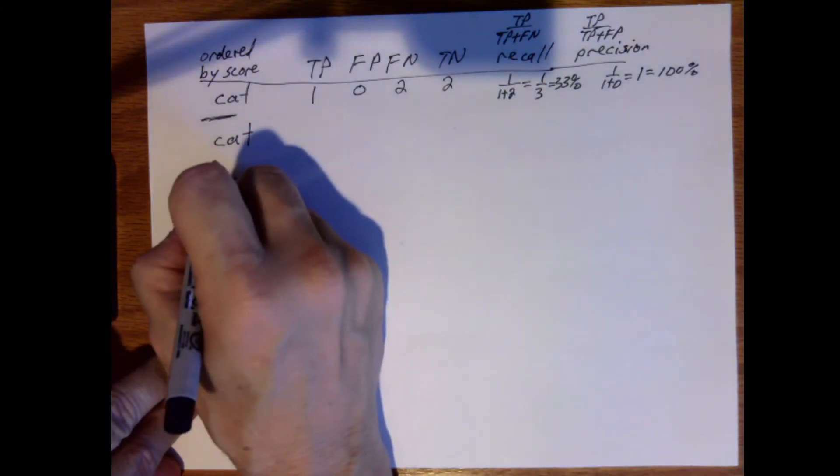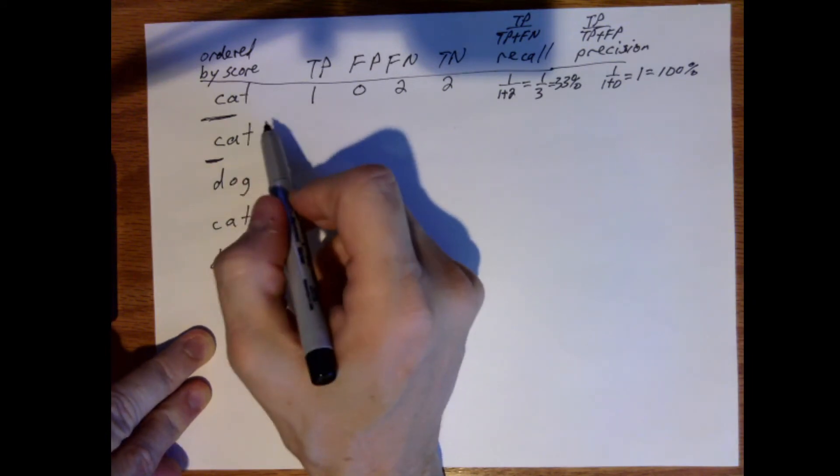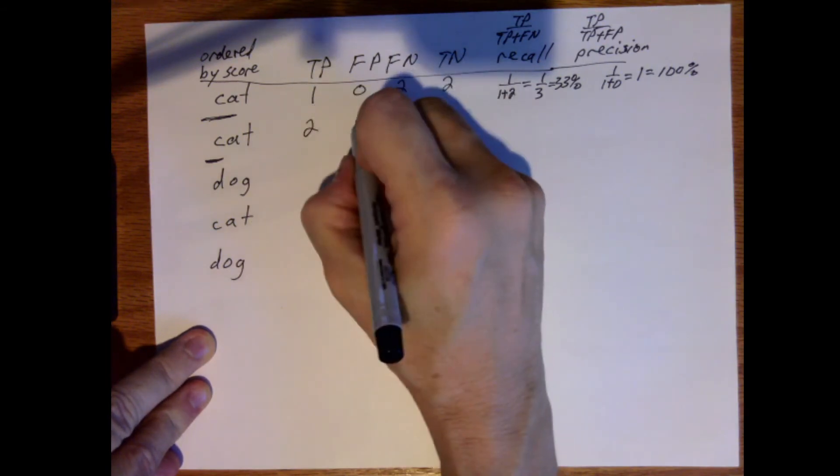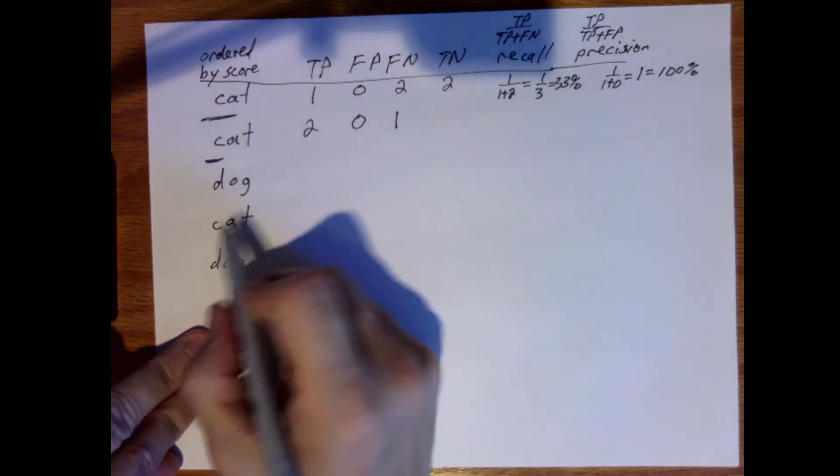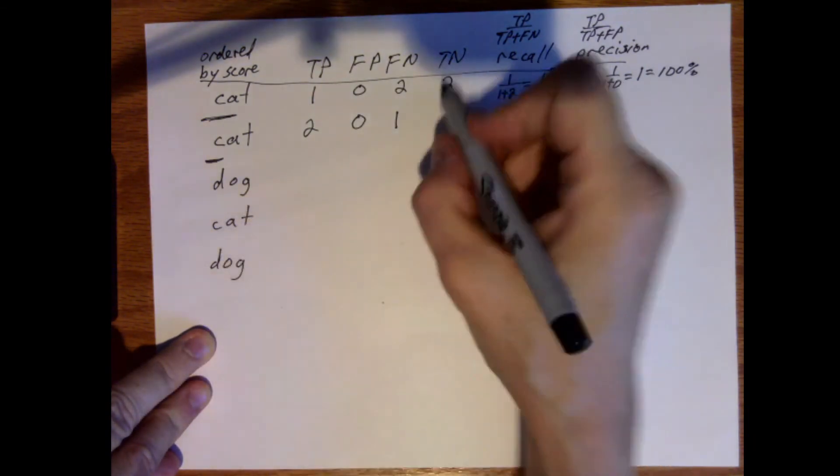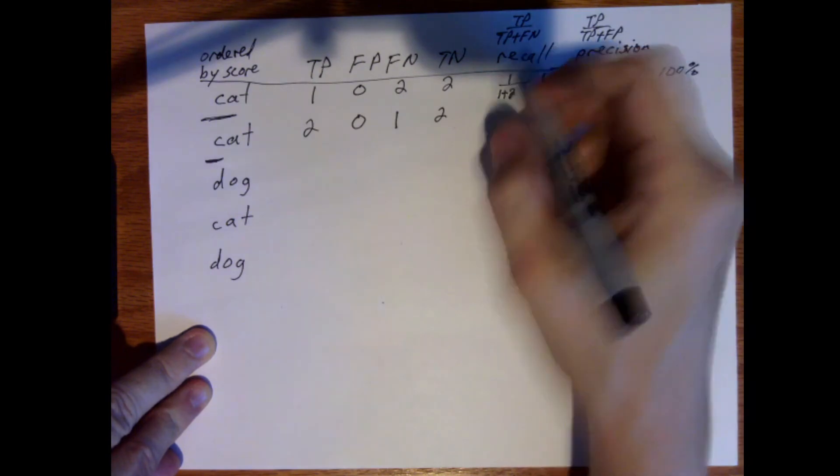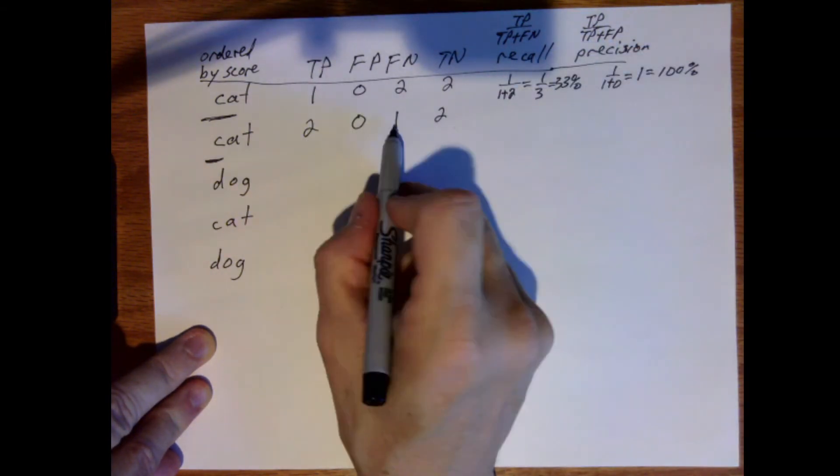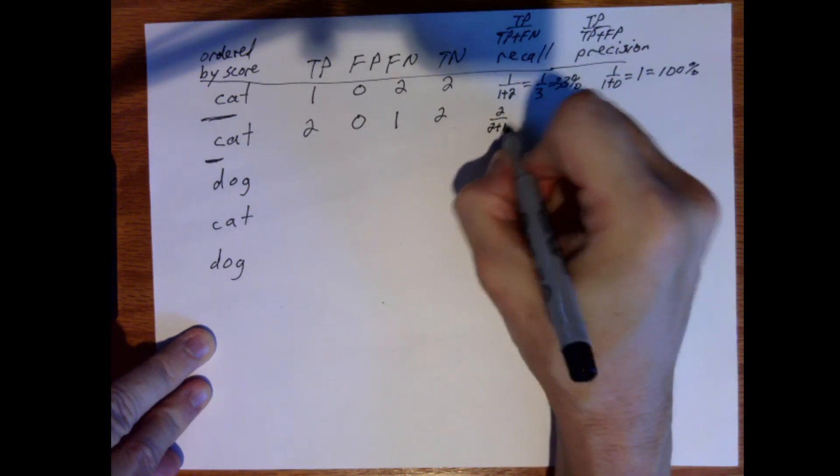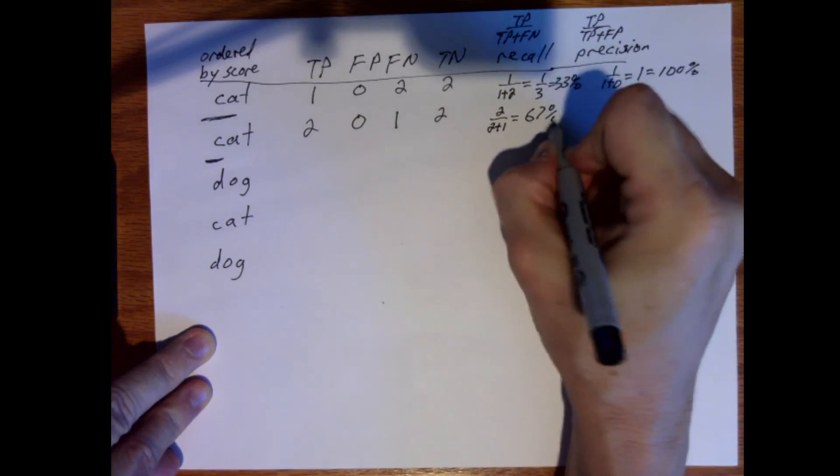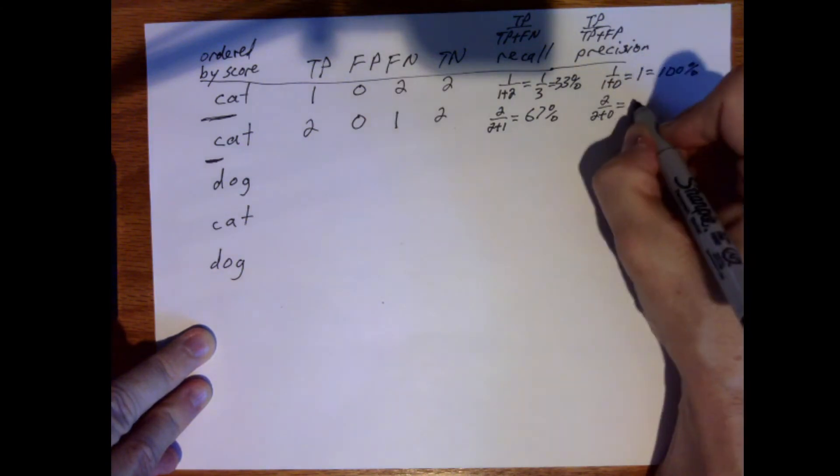So we have good precision, but our recall is pretty poor. So now we lower the threshold. And when we do, what's returned are two pictures of cats and no pictures of dogs. So now our true positive value goes up to two. False positive is still zero. False negative is now one because only one cat image was misclassified. And our two dog images are still correctly classified as not being cats. So now I get two divided by two plus one, which is 67%. And then our precision will be two divided by two plus zero, which is still 100%.